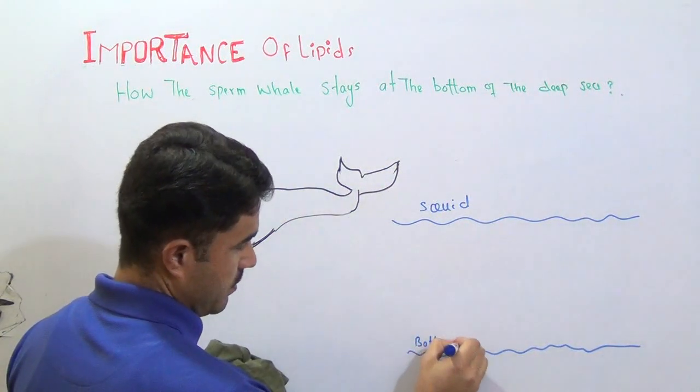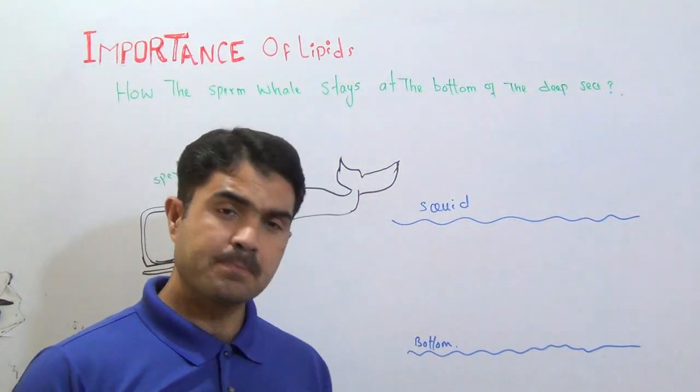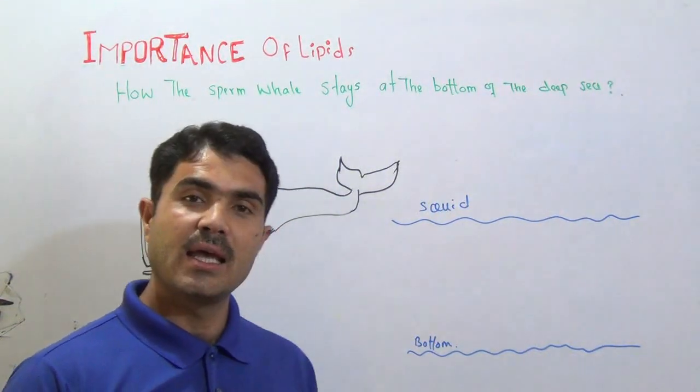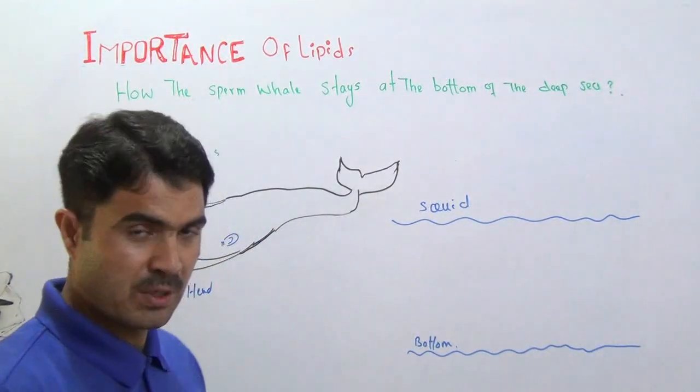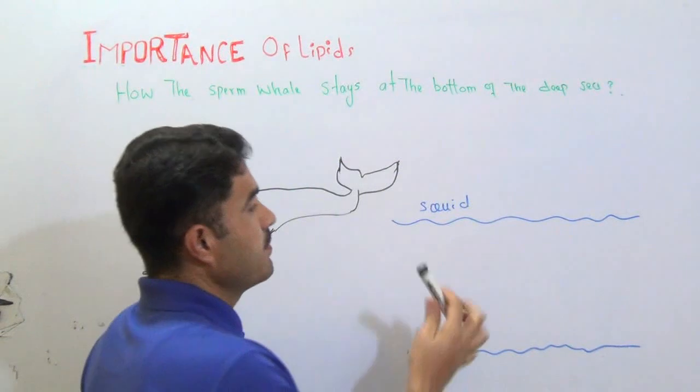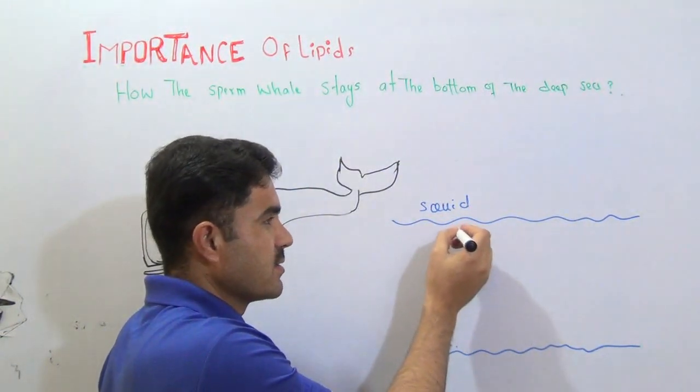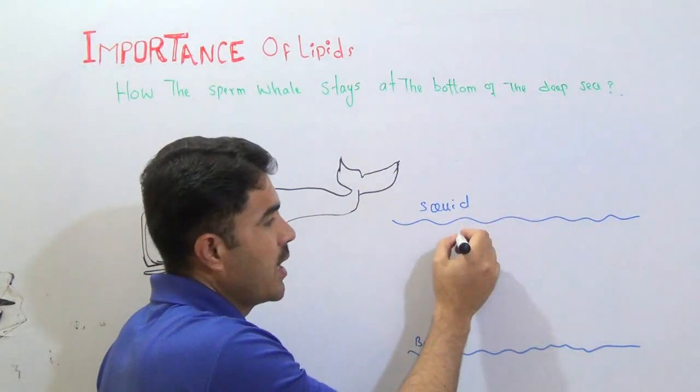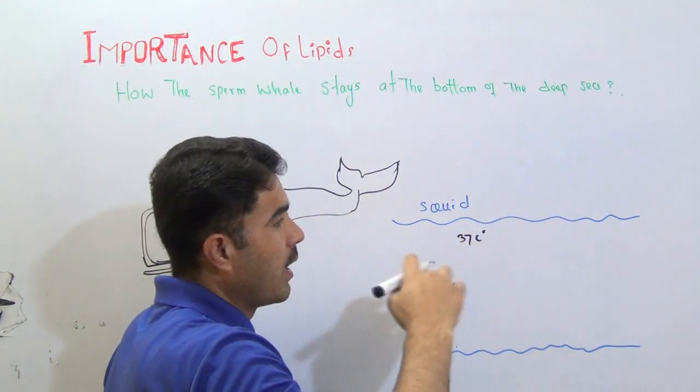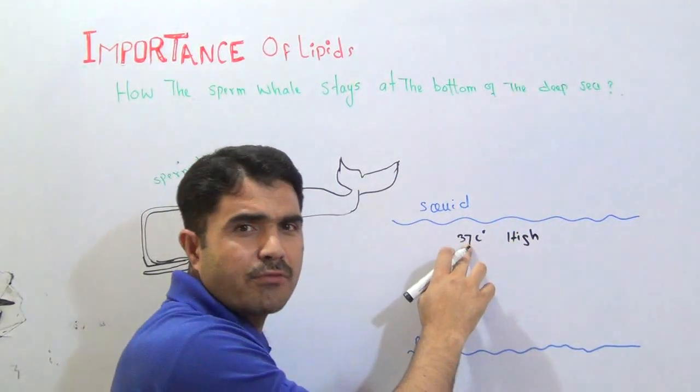One thing is for sure, we know very well that the temperature is not constant in the ocean. There is a difference of temperature in the surface and the bottom. So, usually, at the surface, the temperature is normal. That is 37 degrees centigrade high temperature. So, we will give the word high.